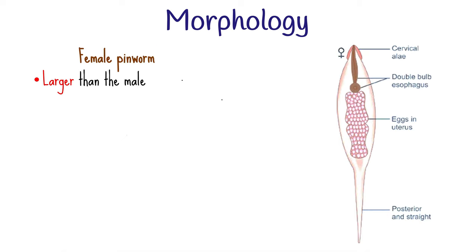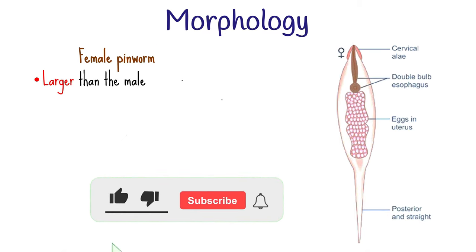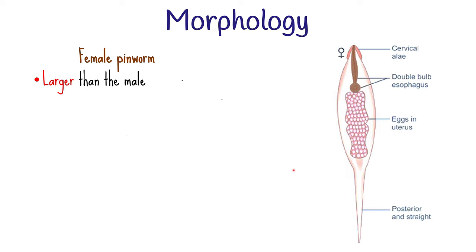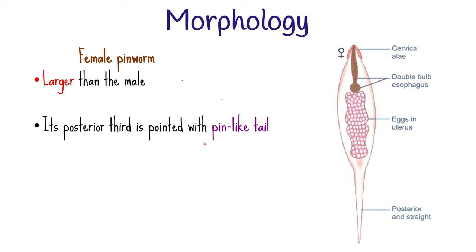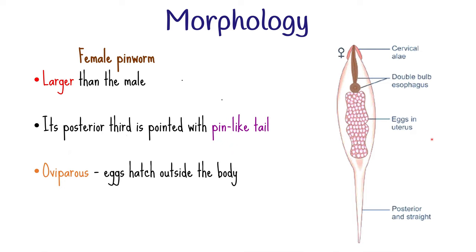The female pinworm is usually larger than the male, measuring approximately 8 to 13 millimeters long and 0.3 to 0.5 millimeters thick. Its posterior third is tapering, straight, thin, and pointed with a pin-like tail. When the female is gravid, almost the whole body is filled by the distended uteri carrying thousands of eggs. Pinworms are oviparous, meaning the female worm produces eggs that develop and hatch outside the body. The lifespan of female pinworms is between 5 to 12 weeks.